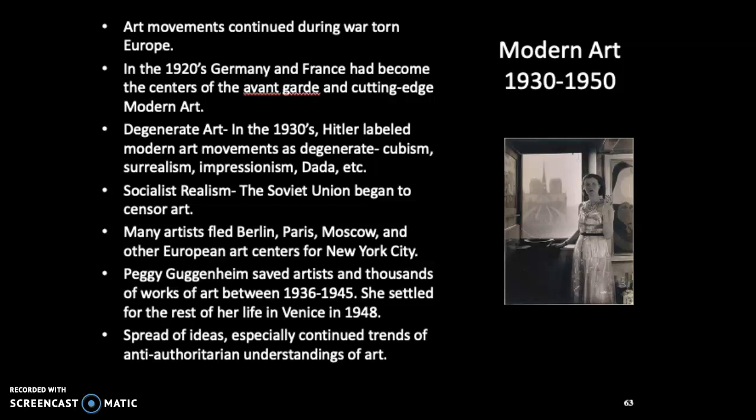Art movements continued during war-torn Europe. In the 20s, Germany and France had become centers of the avant-garde and cutting-edge modern art. But by the 1930s, certain political groups had started to censor art. So in Germany, the concept of degenerate art started — basically Hitler labeled modern art movements as degenerate: cubism, surrealism, impressionism, Dada, etc. If you were labeled degenerate, you could not show or sell artwork. They would also steal and confiscate it.